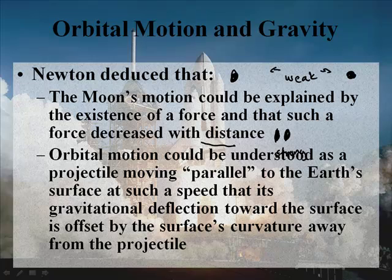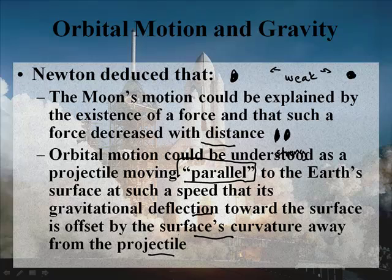He said orbital motion could be understood as a projectile moving parallel to the Earth's surface at such a speed that its gravitational deflection toward the surface is offset by the surface curvature away from the projectile. Write that down, but I want to show it to you — it's a lot easier to see than to write it down.